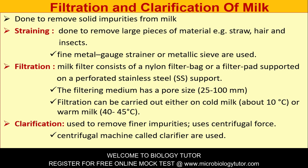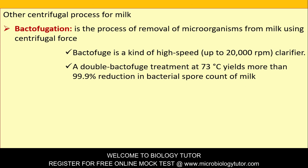Filtration can be carried out on cold milk (about 4°C) or warm milk. Clarification uses centrifugal force — centrifugal machines called clarifiers are used to remove finer impurities. Another centrifugal process is bactofugation: the process of removal of microorganisms from milk using centrifugal force. Bactofugation is a kind of high-speed clarifier at up to 20,000 RPM.